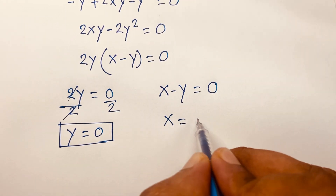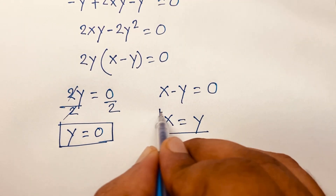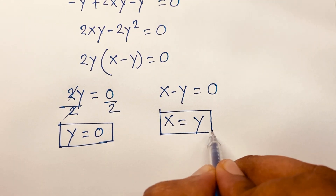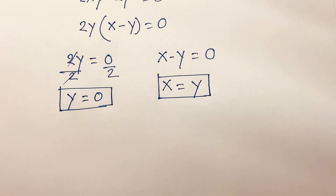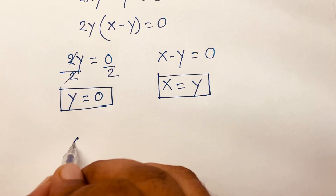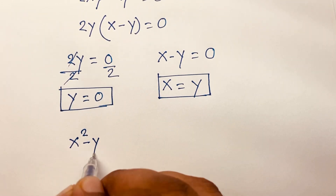From the second case, x minus y equals 0, so x equals y. These are our two answers. Let's verify by checking them in the original equation x squared minus y squared equals (x minus y) squared.